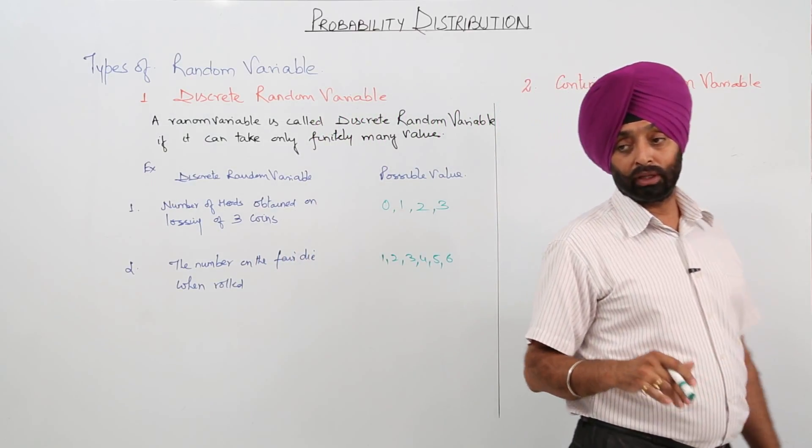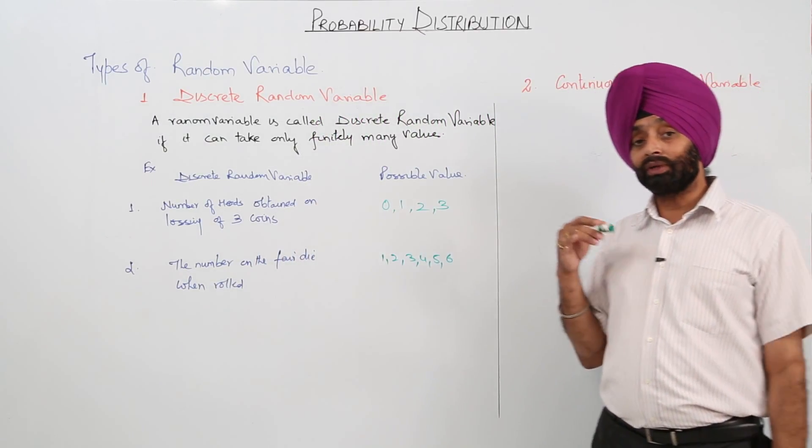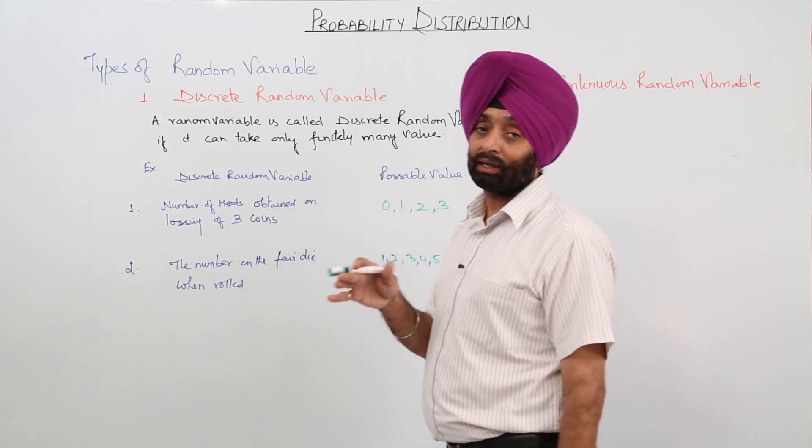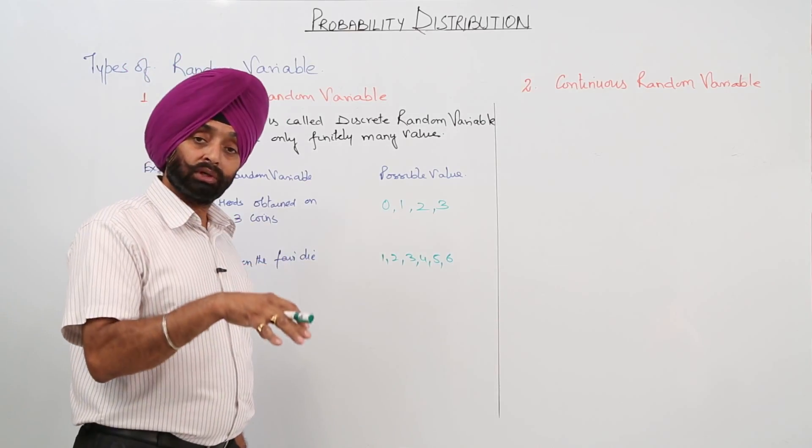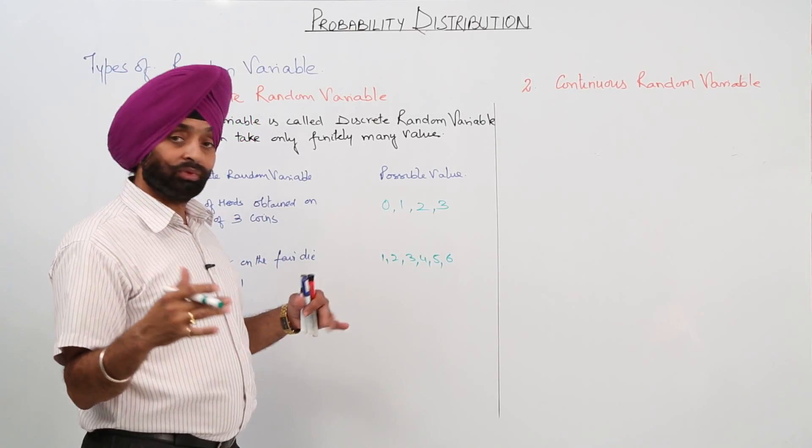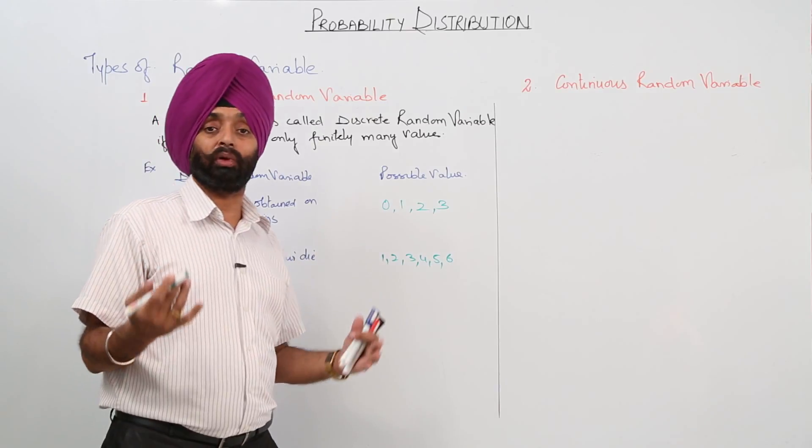Zero means there can't be any queen, we are getting none of the queens. One represents we can get one queen and one card can be other than the queen. And we can get number two, two shows both the cards are the queens. So like this we can convert every question in a numeric form.